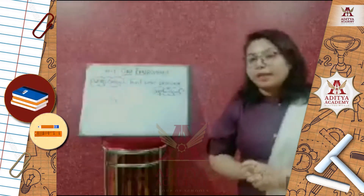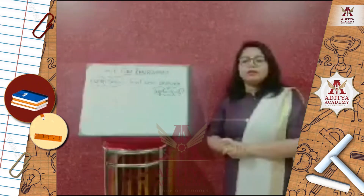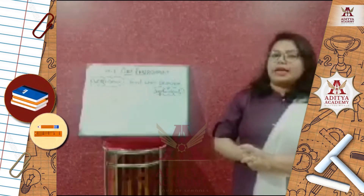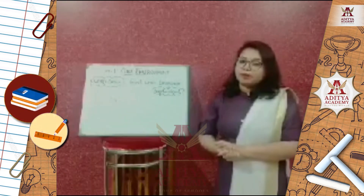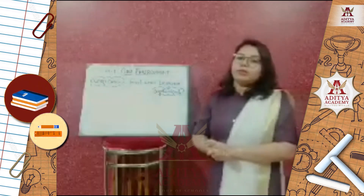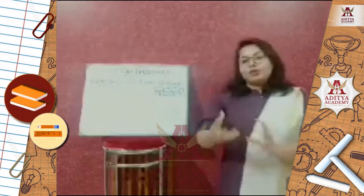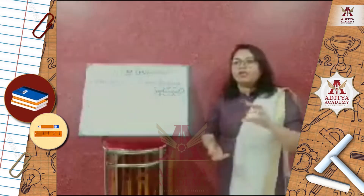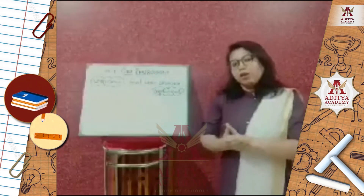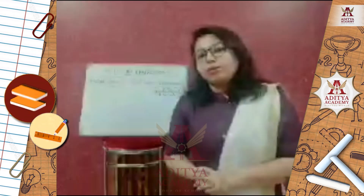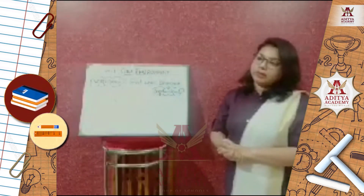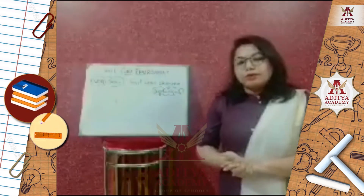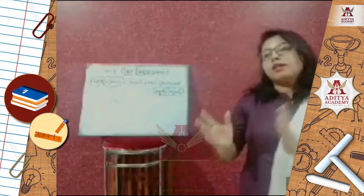Coming to the importance of gases, the first gas abundant in nature is nitrogen gas. Seventy percent of the air is made up of nitrogen gas. The importance of nitrogen gas is that when it mixes with the soil, it helps to increase the fertility of the soil. That is why it is very important.